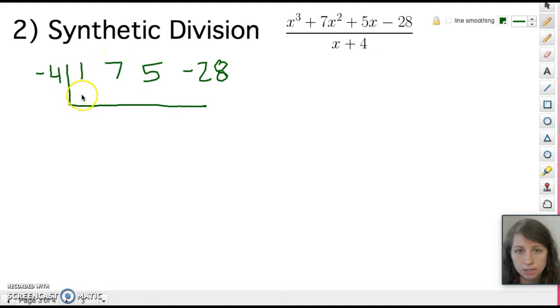All right so let's go and do this method. So the first step is we will bring down this 1. The second step we will multiply the negative 4 times the 1. We'll put that right here minus 4. And then we're going to add. So 7 minus 4 is 3. Then we just keep repeating these steps. So negative 4 times 3 is negative 12. We add 5 plus negative 12, negative 7.